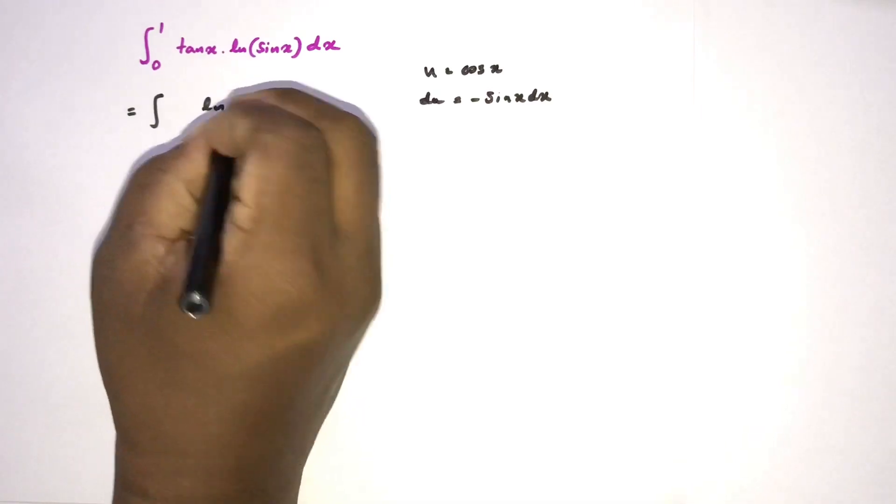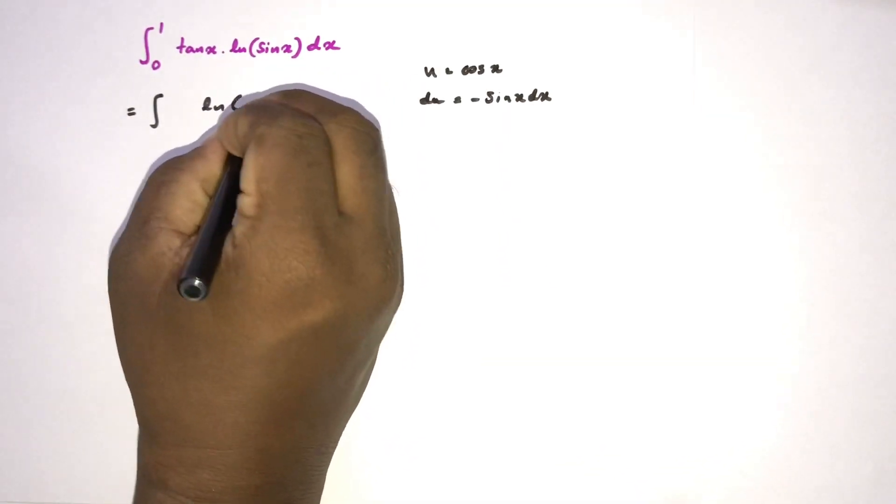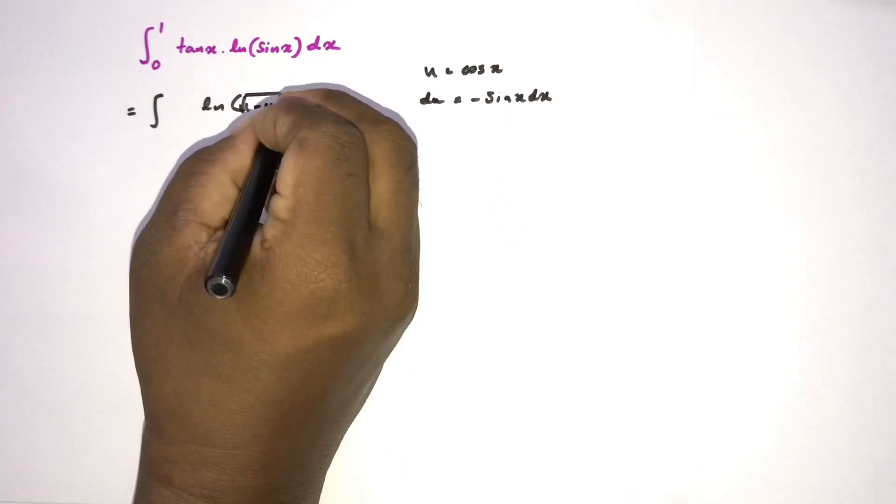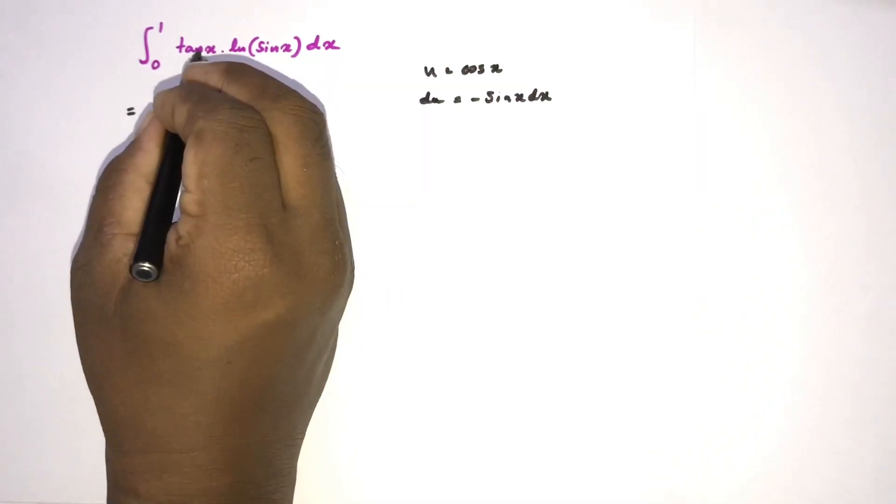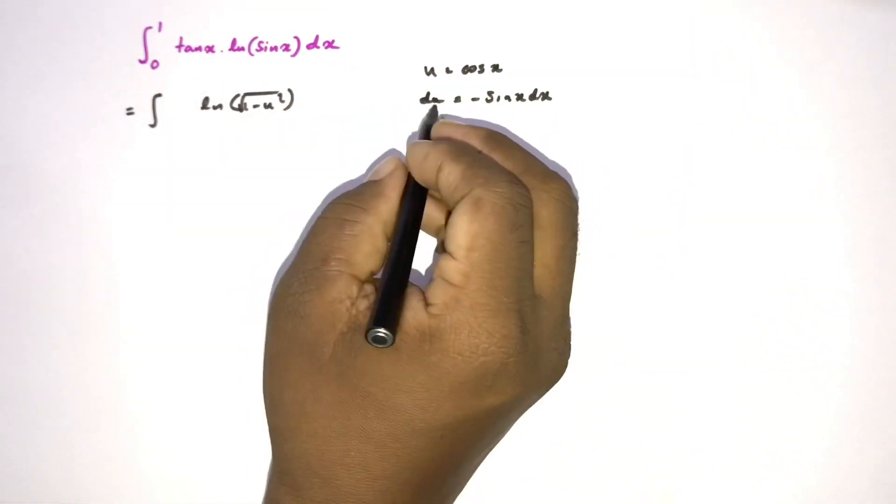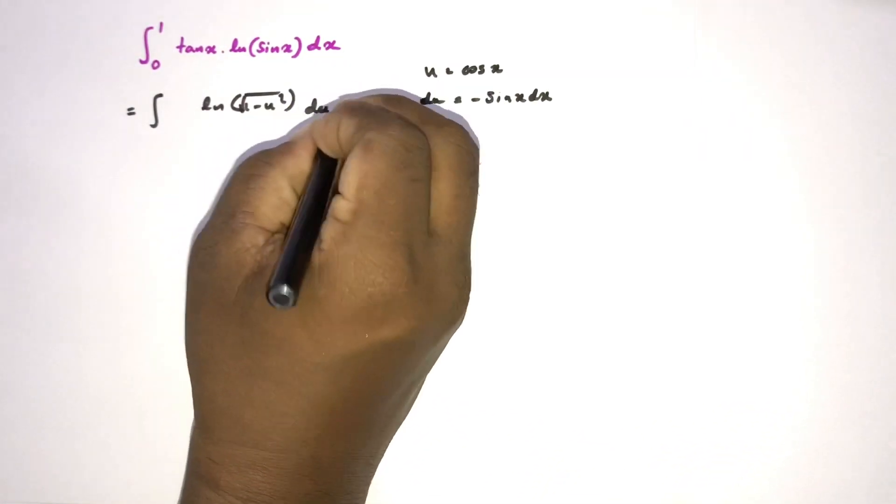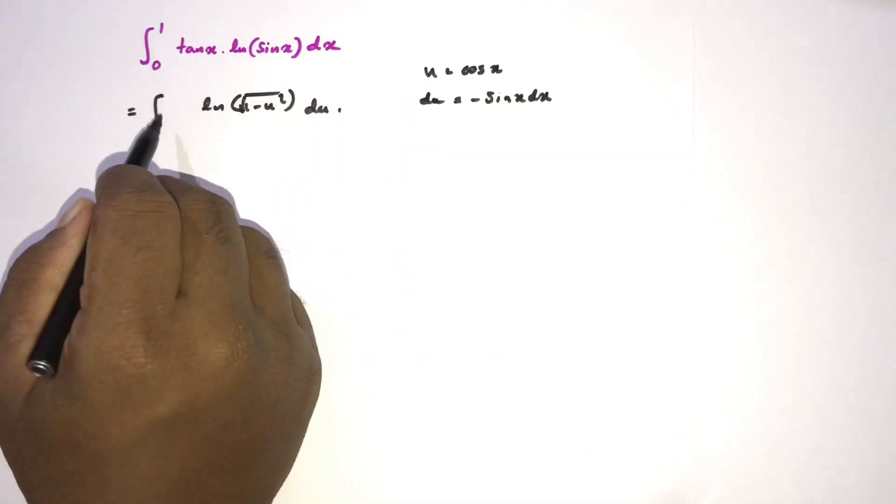We know natural log of sine, we know one minus u squared here is square root, and here sine of x dx. Sine of x dx we know is minus du, so du. But if we consider here the limit, we know one to zero, but here minus sign, so zero to one.